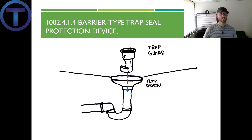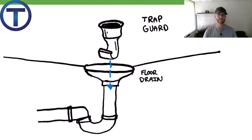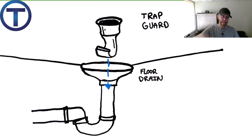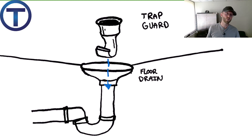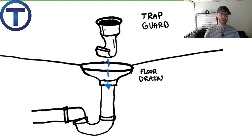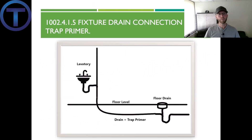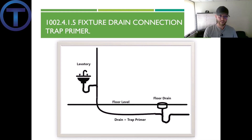Section 1002.4.1.4 gives us information about the barrier type trap seal protection device. Rather than putting water down the drain, which is actually a waste of water, we can just put a rubber membrane down into the trap — it keeps air or gases from coming out but allows liquid to go down when necessary. This is a great option, and I kind of wish I was the guy who thought this up, because for a little piece of rubber and plastic you can buy it for $60. These are a great option for floor drains that dry out quickly or in a washroom that doesn't get water but where you don't want to be adding a primer. Section 1002.4.1.5 — a new addition in the 2021 International Plumbing Code — allows use of a fixture drain connection for the trap primer if it's a lavatory within the same room on the same floor level that feeds into the floor drain, so you're basically adding hand-wash water to the trap.